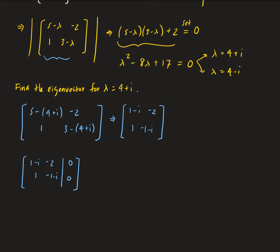So remember, we want the determinant equal to zero, and this is the eigenvalue that makes this determinant equal zero. That means, using previous concepts, these two vectors must be linearly dependent. So when we do the REF, we expect the last row to be zeros. This gives us one minus i, negative two, then zeros on the bottom.